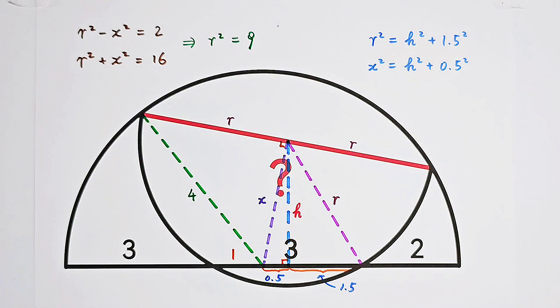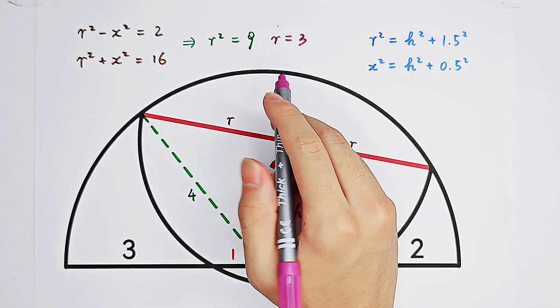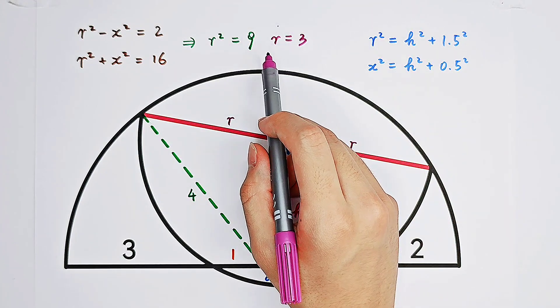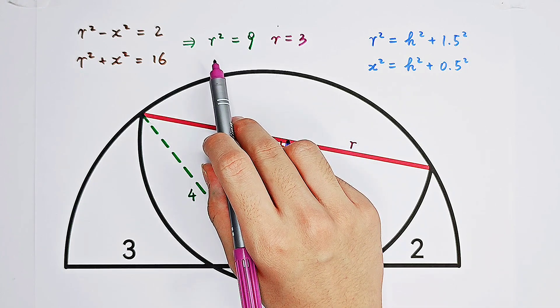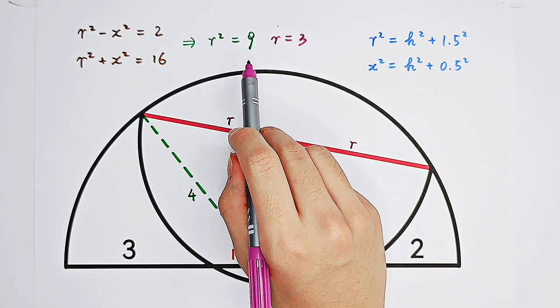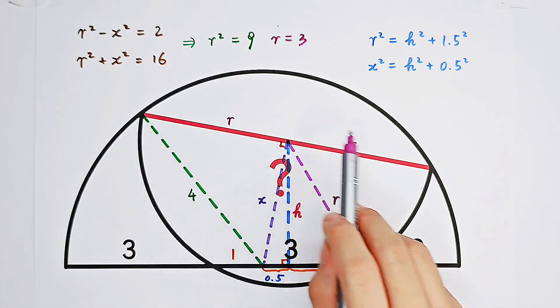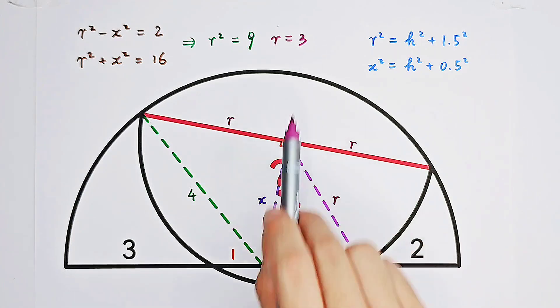R squared is 9, so R is, don't calculate it wrong, 3, because it is positive. If we just solve for R and don't consider it as the radius, then R has to be 3 and negative 3. However, it is a length, and a length can never be negative, so R is 3.